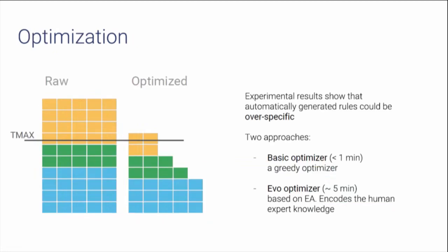When I implemented this algorithm, I ran into a new problem: the signatures were too specific — too many attributes, weight too high, impossible to use. So in order to create a better signature, we have to remove some attributes. I developed two strategies: one very simple, the basic optimizer, which randomly removes some attributes; and the other, the evolutionary optimizer. The evolutionary algorithm is needed because there are some unwritten rules about how to generate a good signature, and a genetic algorithm can find the best combination to generate the best result. Both are very fast — one under a minute, the other about five minutes — so it's scalable.